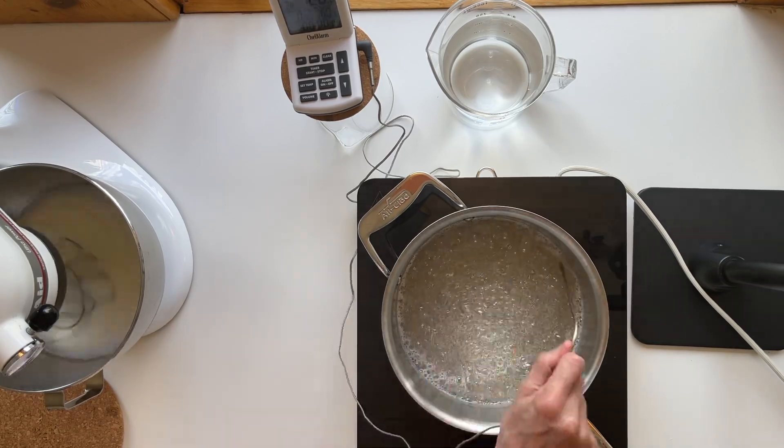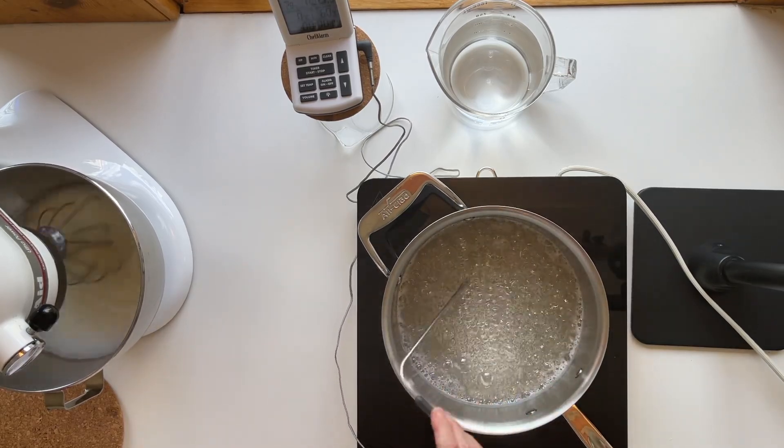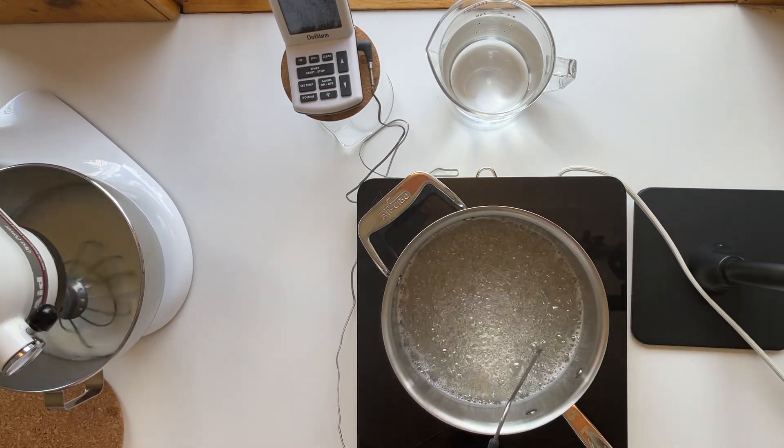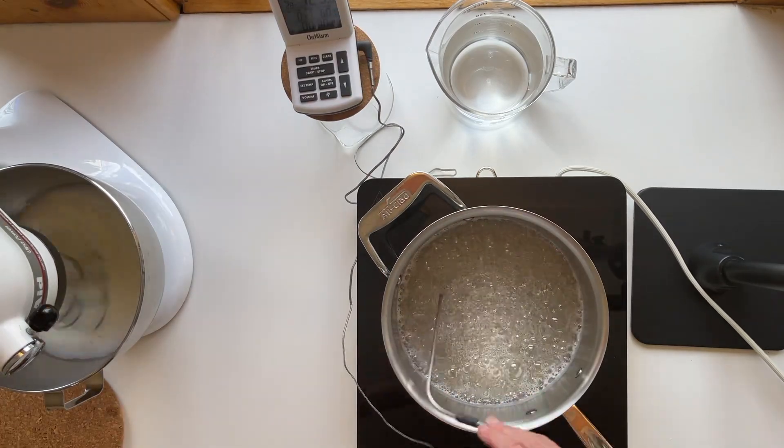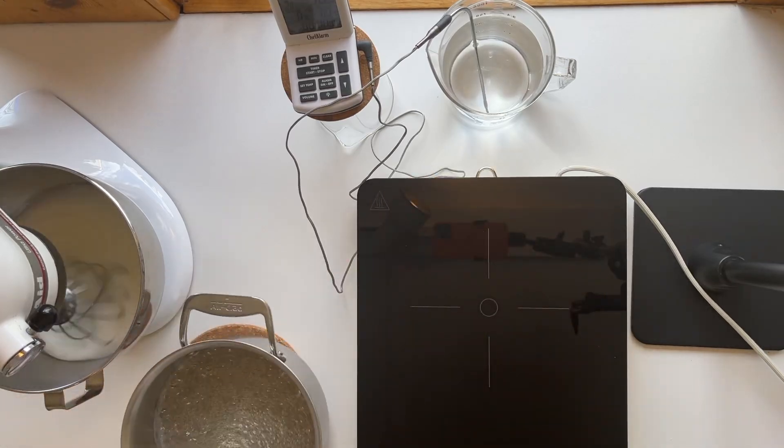The thermocouple on this digital thermometer goes up to like 700 degrees. You want to move it around with it touching the bottom of the pan—you're going to get an accurate reading if you move it around.